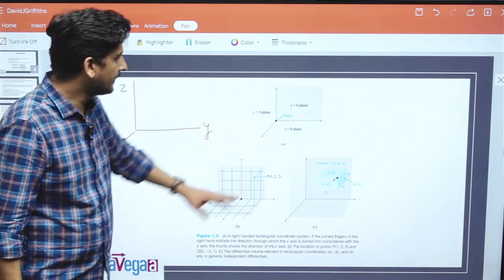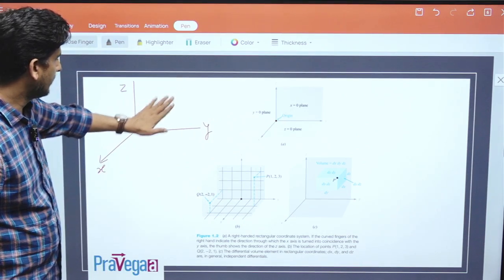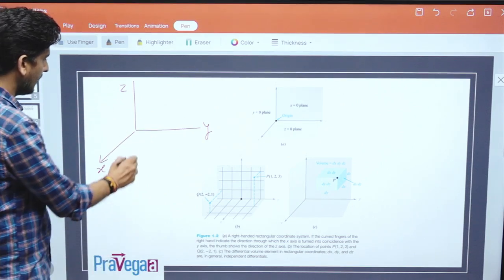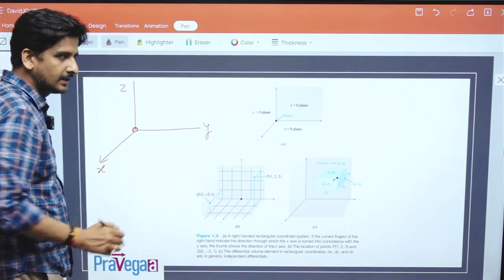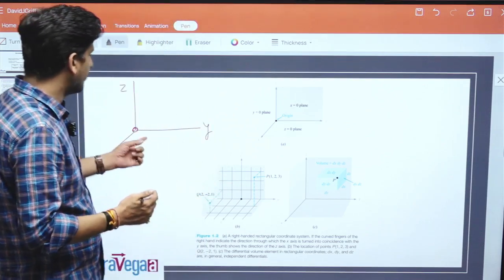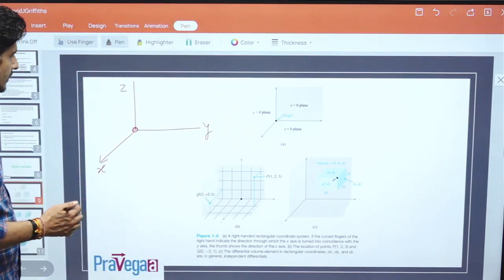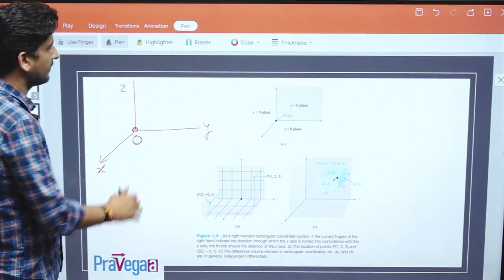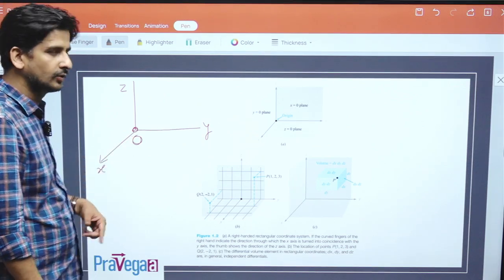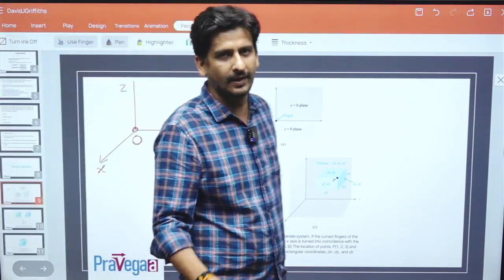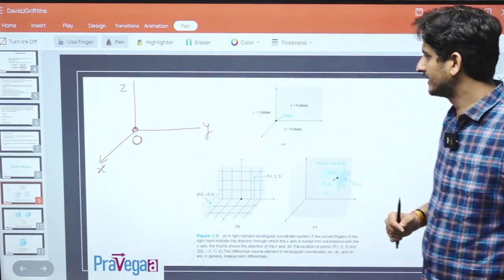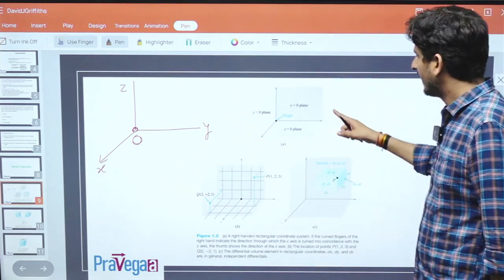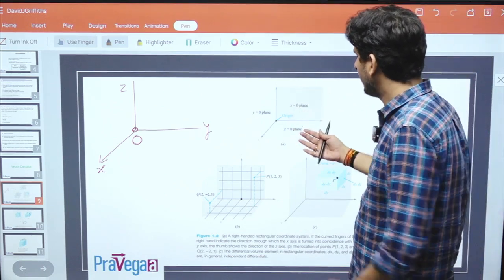You can see in this figure, this is x equals 0 plane, this is z equals 0 plane, and this is y equals 0 plane. All three perpendicular planes combine at the origin. In every coordinate system, whatever I am telling you in the Cartesian coordinate system will work for other coordinate systems also.